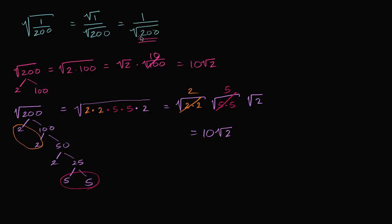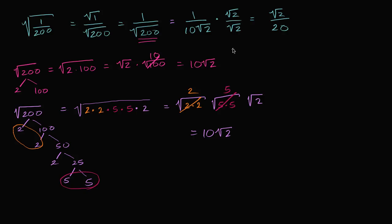So the square root of 200 equals 10√2, and our expression becomes one over 10√2. Now some people don't like having a radical in the denominator. To rationalize it, multiply both numerator and denominator by √2. That gives us √2 over ten times (√2 × √2). Since √2 × √2 = 2, the denominator becomes ten times two, which is twenty. So it can also be written as √2 over 20.